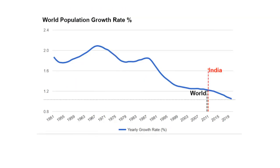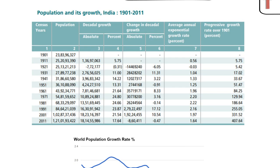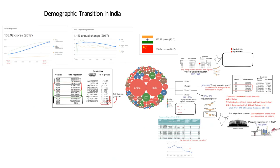But if you see, it was still higher than the world population growth rate of 1.23%. So this is what we mean when we say this period is referred to as the period of high growth with definite signs of slowing down. This declining trend marks the beginning of the new era in the demographic history of India.